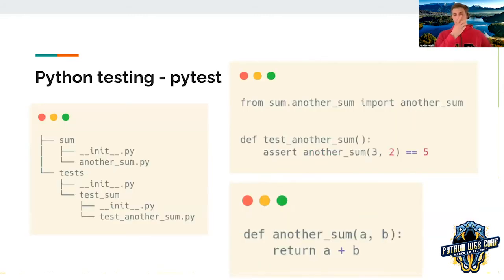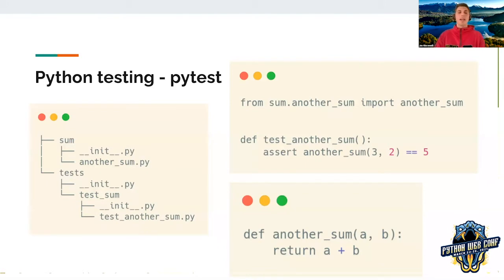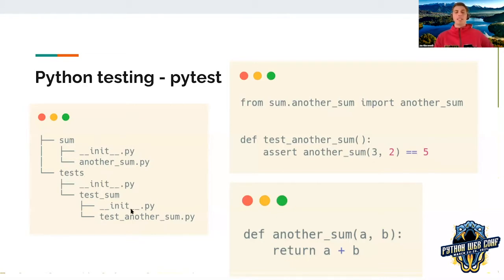You can install PyTest with pip, Poetry, or pipenv as a development dependency since you don't need it in production. When structuring your project, I suggest creating a tests package at the same level as your production packages, and mirroring the structure inside tests to match your production packages — so if you have a `sum` package, you'd have `test_sum`. This makes it easier to navigate between production and test modules. If you don't have tests for some module for a good reason, just skip it.